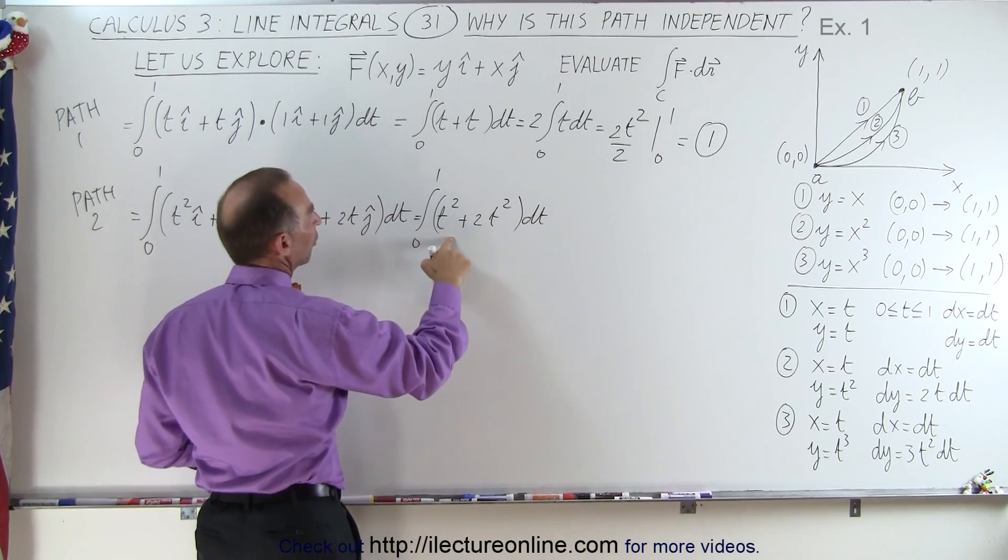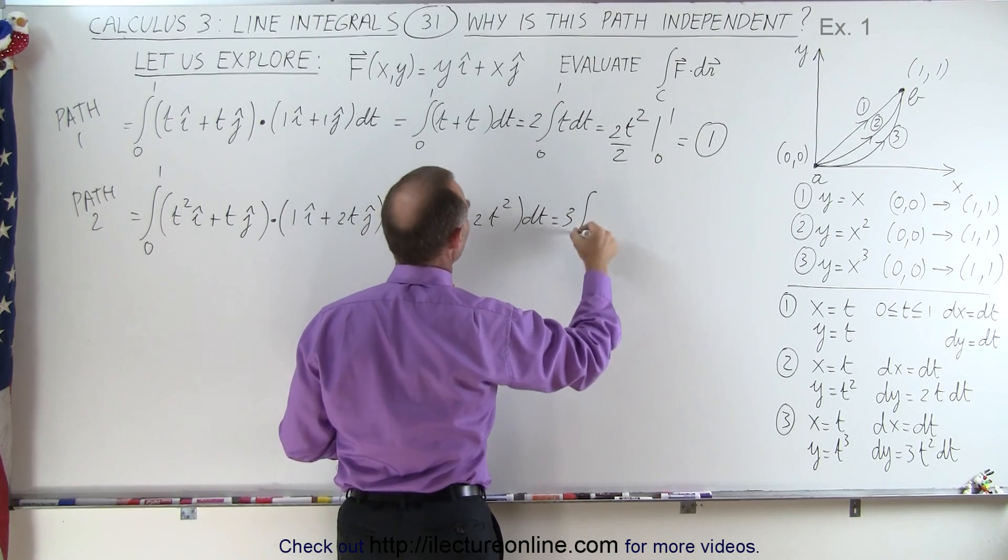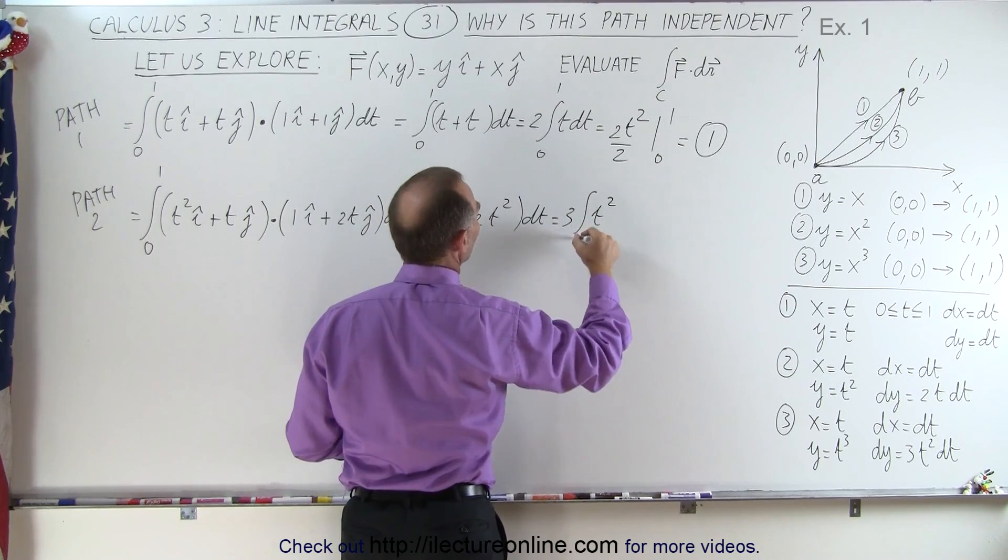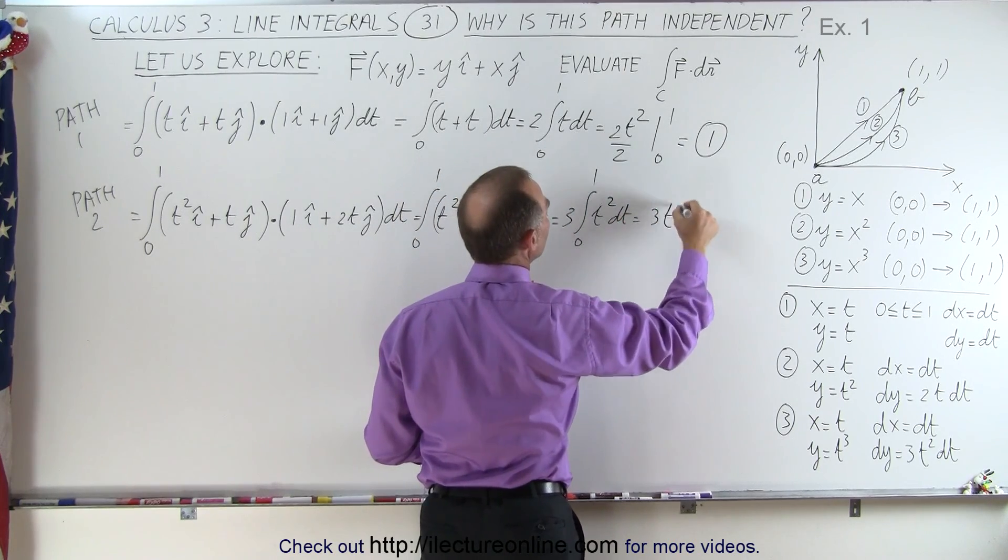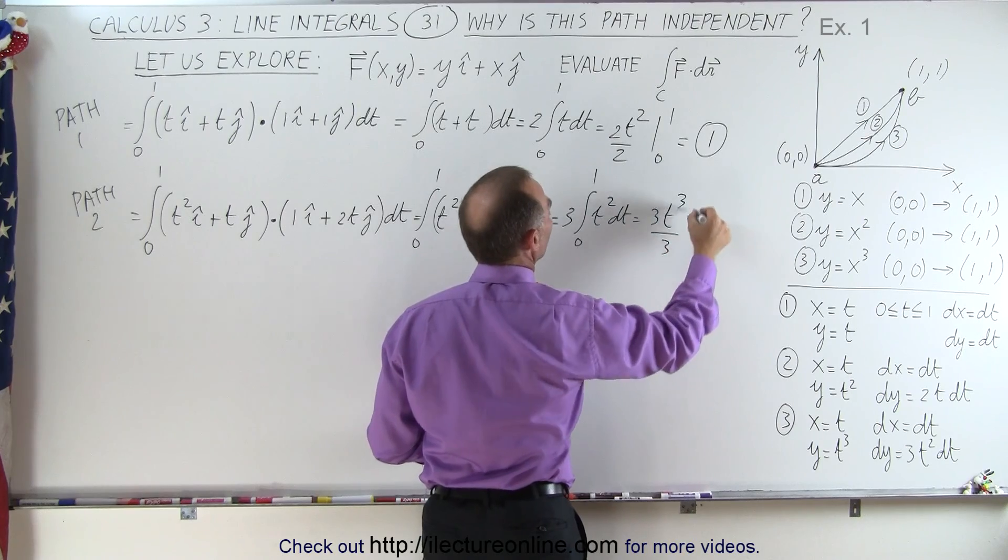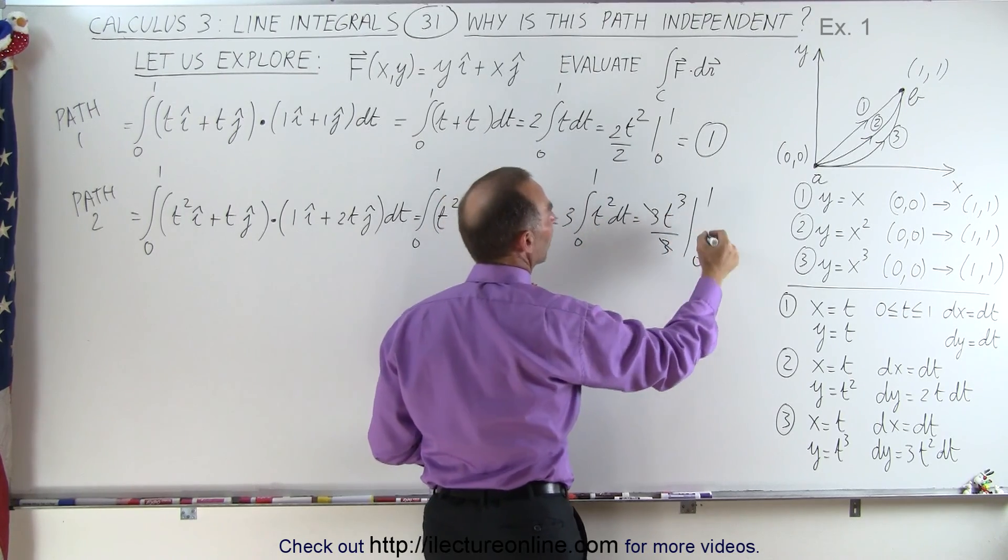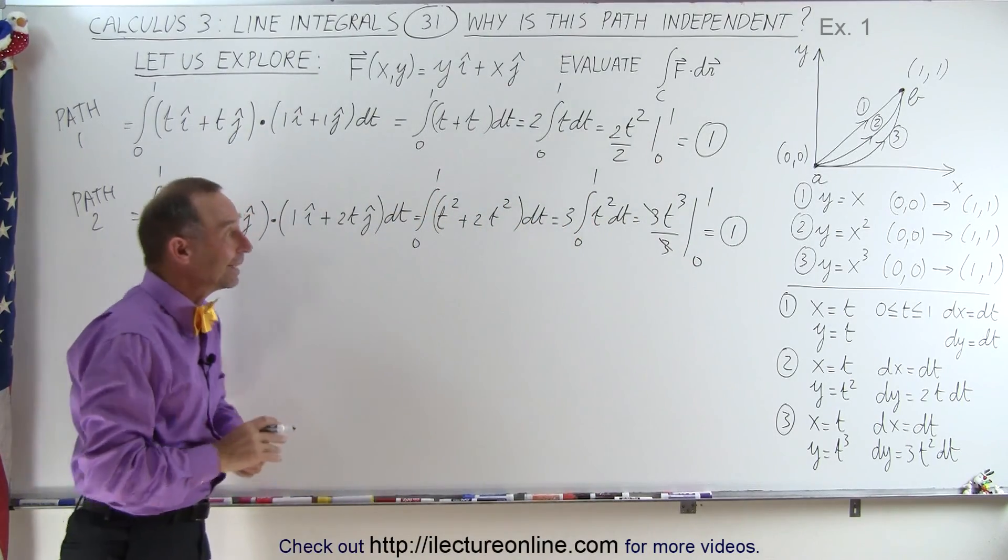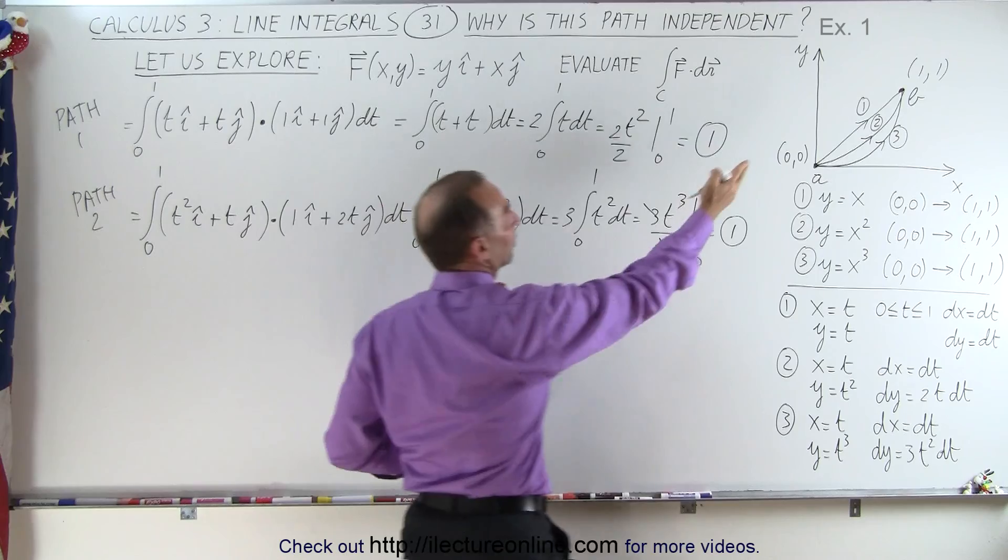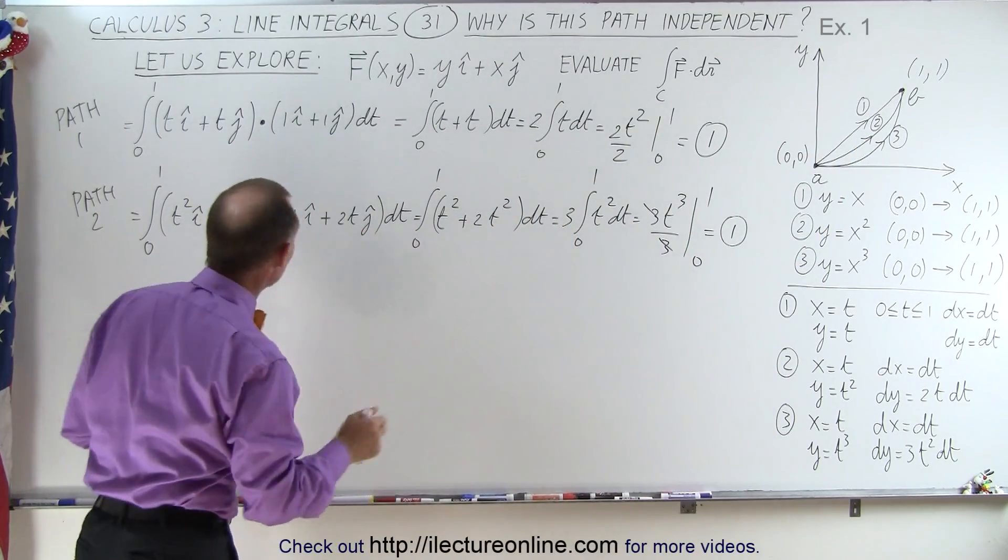which is equal to 3 times t squared from 0 to 1 dt. And when we integrate, we get 3t cubed over 3 evaluated from 0 to 1. And the 3s cancel out, plug in the 1, we get 1 again. You can see the very same result. It didn't matter if we took the linear path or the quadratic path. Let's do it one more time using the cubic path.